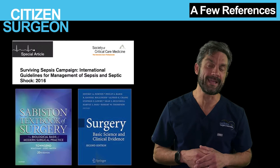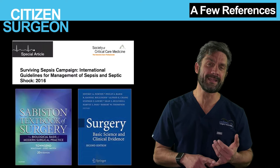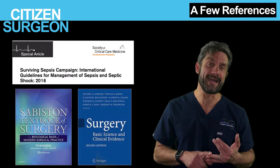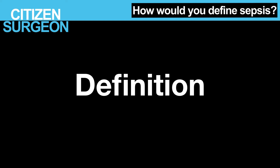The three references today are: number one, the Surviving Sepsis Guidelines — you'll find a link in the description. Number two is Sabiston's Textbook of Surgery. And number three is Norton's Surgery textbook. The Surviving Sepsis Guidelines is something you need to review time and time again. The Norton book gives you that basic science overview, and Sabiston's hits the clinical bullet points. So let's find out how we define sepsis.